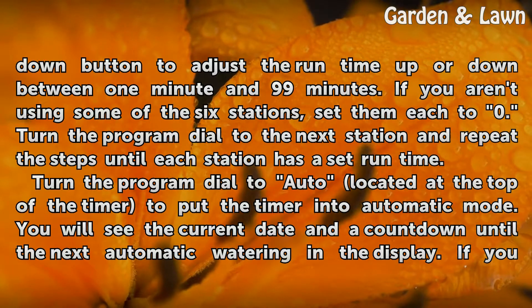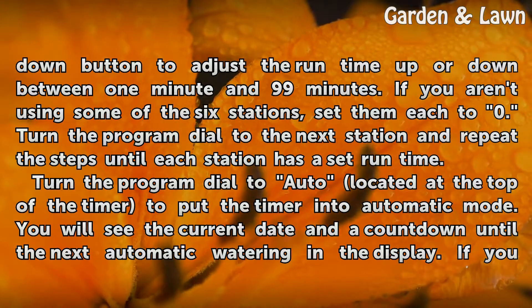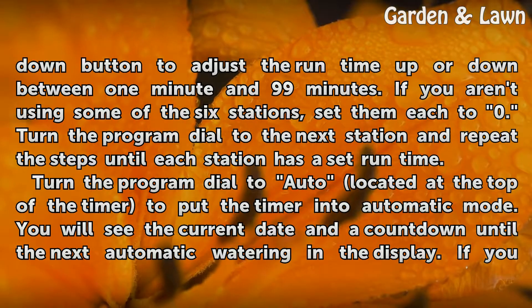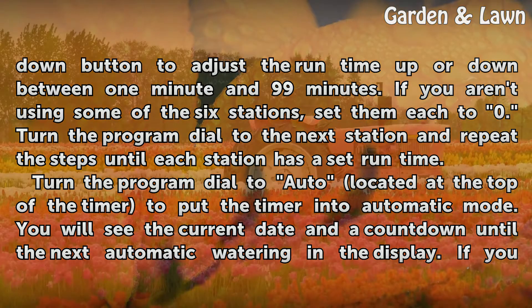If you aren't using some of the 6 stations, set them each to 0. Turn the program dial to the next station and repeat the steps until each station has a set runtime.